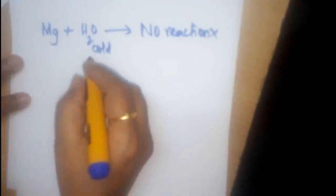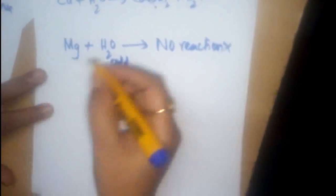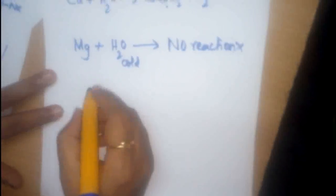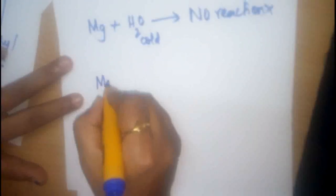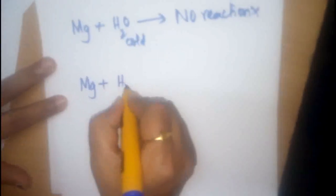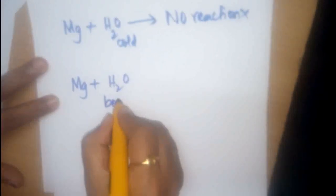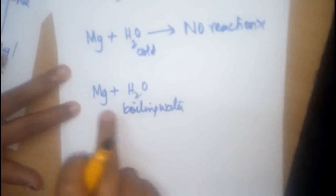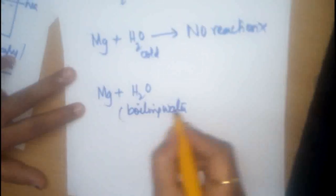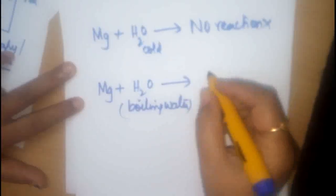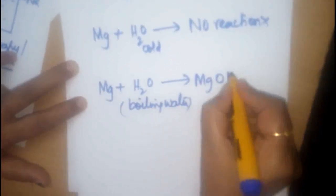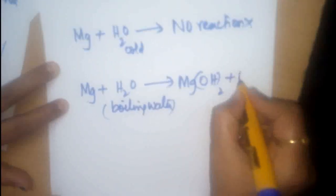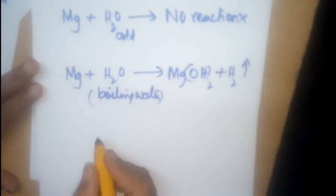There is no reaction. When the conditions of water is slightly modified, magnesium reacts with water only when it is in boiling hot, the boiling water. Magnesium reacts with water in the boiling condition, the boiling water, to form magnesium hydroxide and hydrogen gas is evolved.